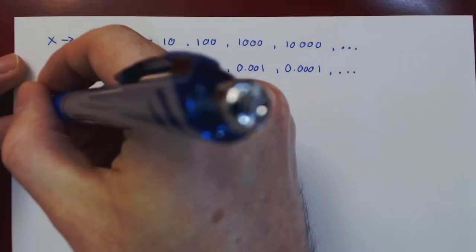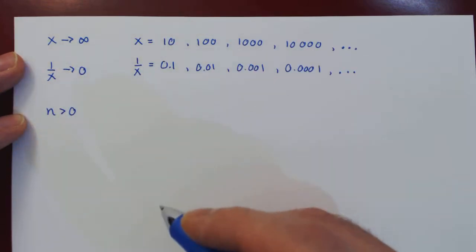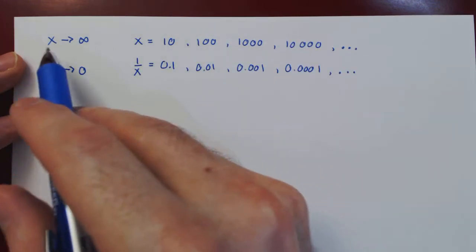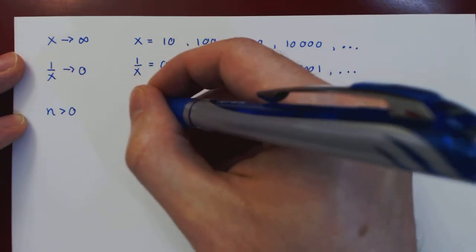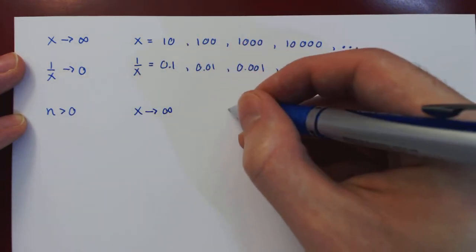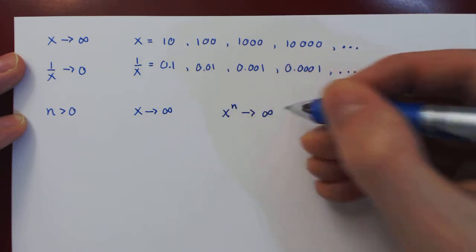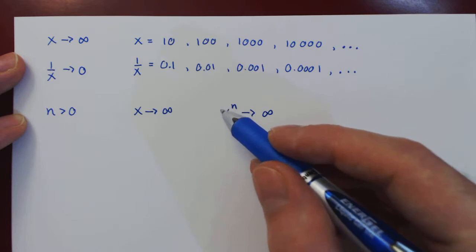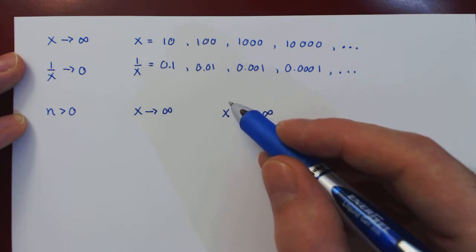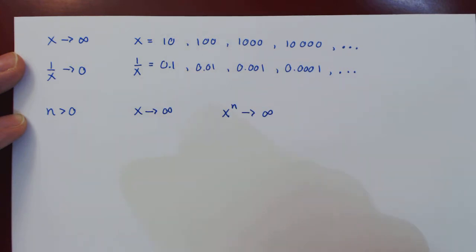And we can now look at the more general case for any positive power of x. So if x approaches infinity, then any positive power of x will also be approaching infinity. As x gets larger and larger, any positive power of x will also be getting larger and larger.